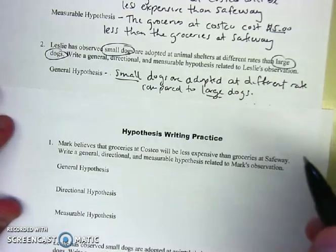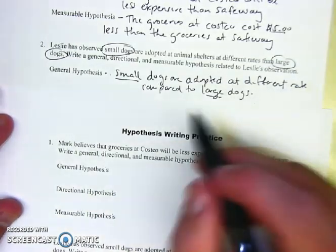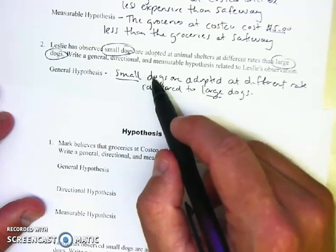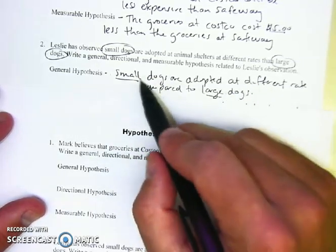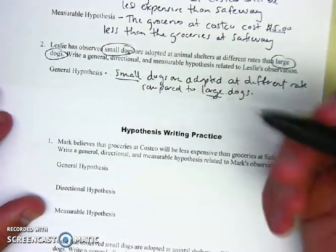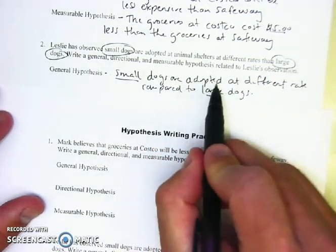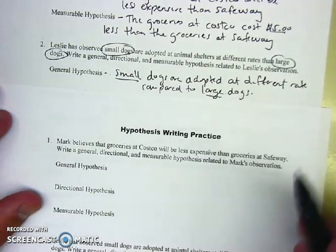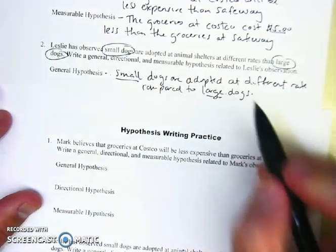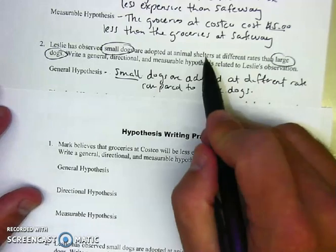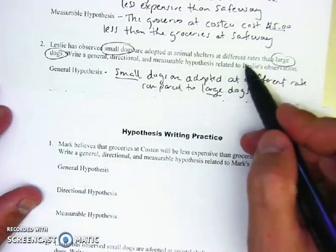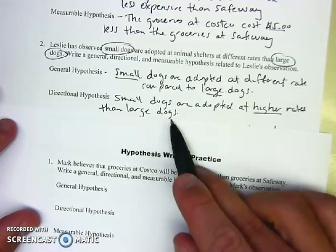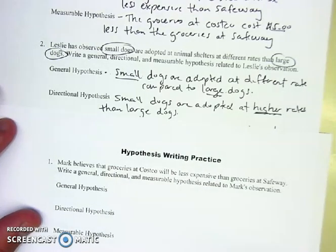What you do not want to do — and I have these words circled — is assume 'small' and 'large' are directions. These are just adjectives describing the two types of dogs; they don't tell you what you're measuring in terms of rate. That's like saying 'Costco and Safeway' — those are just the subjects. Writing 'there's a different rate of adoption for dogs' leaves out who you're comparing, and that's not enough for a hypothesis. Since 'more' or 'less' is not given, you have creative ability to pick a direction. I chose: 'Small dogs are adopted at higher rates than large dogs' — 'higher' gives you that direction.